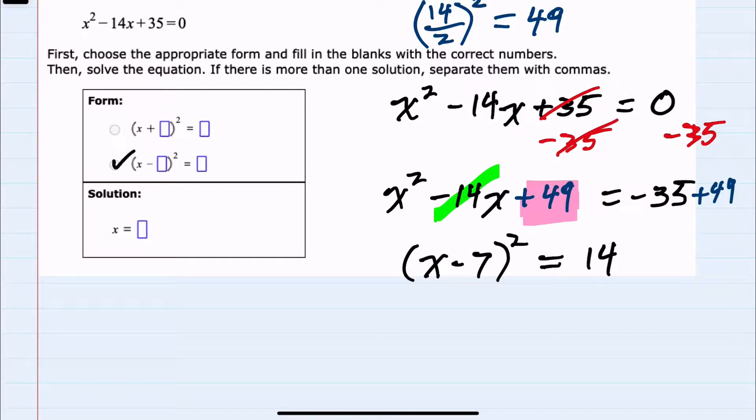So I have the form (x - 7)² = 14. Notice here that the minus is because the middle term of the quadratic I completed the square on was negative.